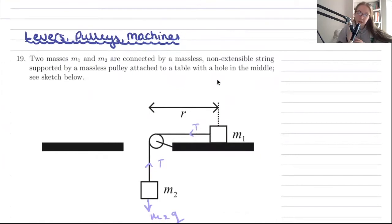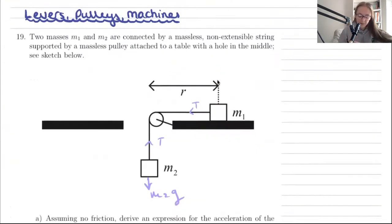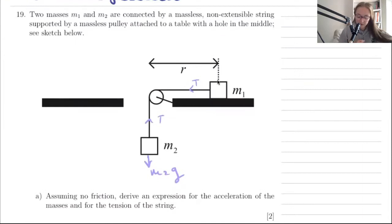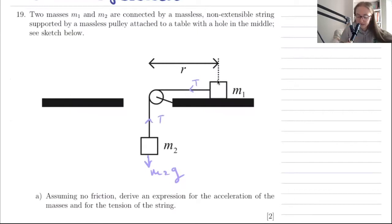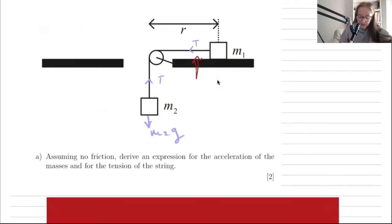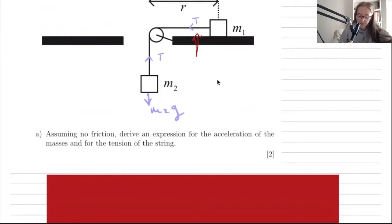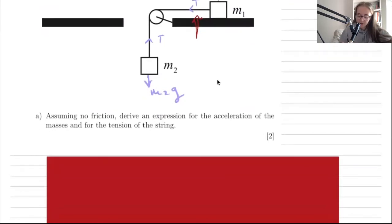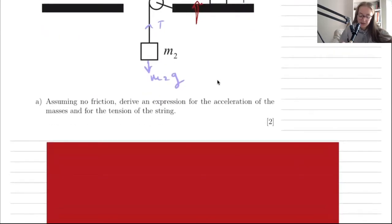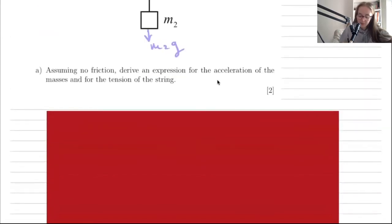The next question is about levers, pulleys, and machines. Two masses are connected by a non-extensible string (no elastic potential energy), and assuming no friction, we need to derive expressions for the acceleration of the masses and the tension in the string.